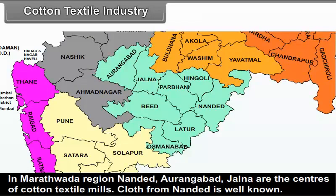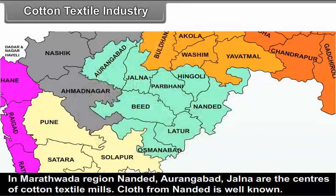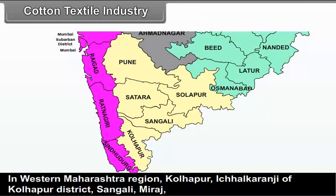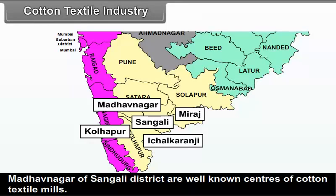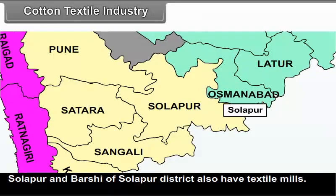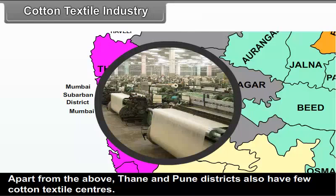In Aurangabad division, in the Marathwada region, Nanded, Aurangabad and Jalna are the centers of cotton textile mills. Cloth from Nanded is well known. In Pune division, in western Maharashtra, Kolhapur, Ichalkaranji of Kolhapur district, Sangli, Miraj and Mardavnagar of Sangli district are well known centers. Solapur and Barshi of Solapur district also have cotton textile mills. Apart from the above, Thane and Pune districts also have a few cotton textile centers.